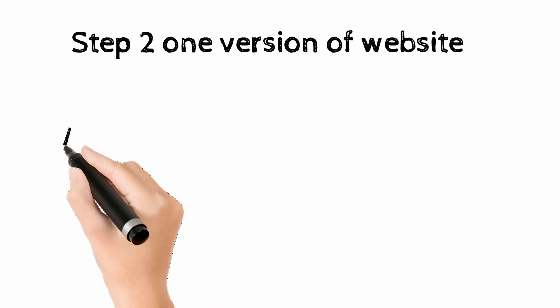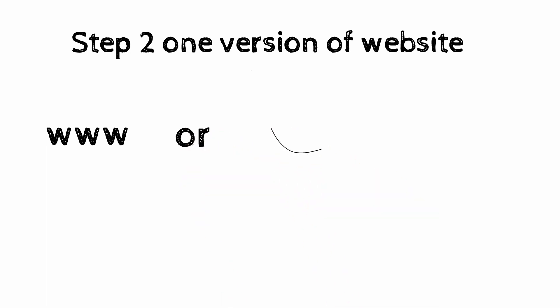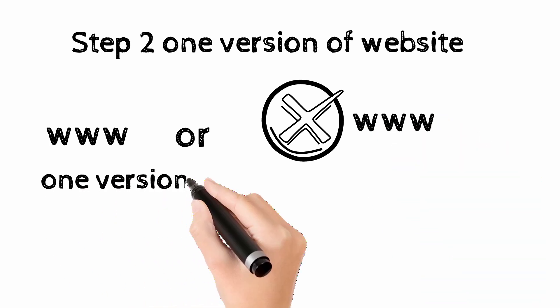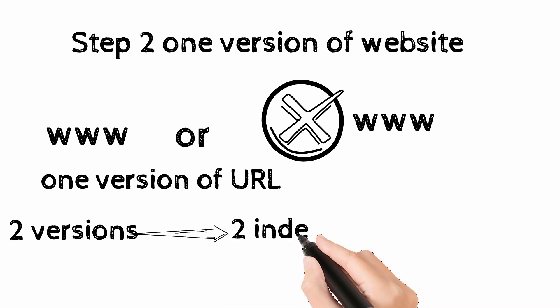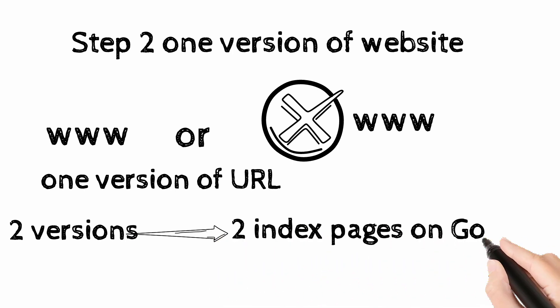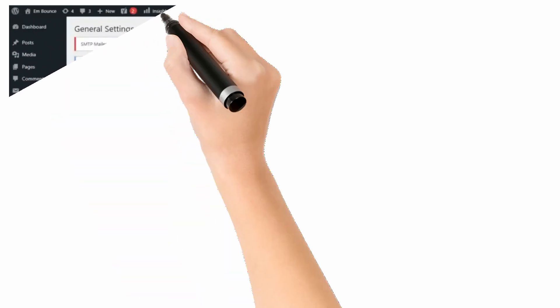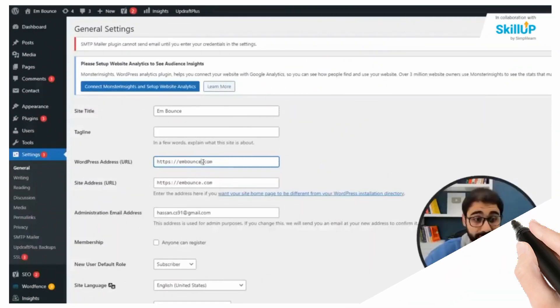Step 2: have one version of your website domain. You have to choose between the www version or the non-www version. You need to choose one version of your domain URL. If you have two versions, you'll end up with two index pages on Google and it will make you compete with yourself. So ensure every page has a single version. In the dashboard of your website, go to general settings and set your version in front of the WordPress address URL.